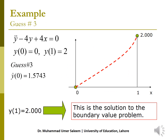Now I have this equation — the boundary value problem — but if I remove the boundary condition at 1 and add the guess y'(0) = 1.5743, this becomes an initial value problem. This initial value problem has a solution where y(1) = 2. This means the second boundary condition is satisfied. So the solution to this initial value problem is also the solution to the original boundary value problem — it is the path passing through both required points.